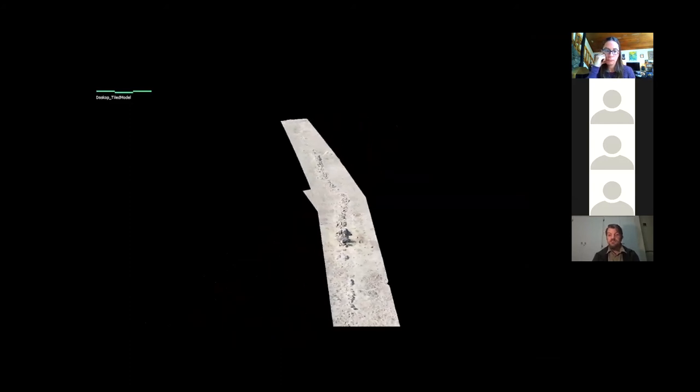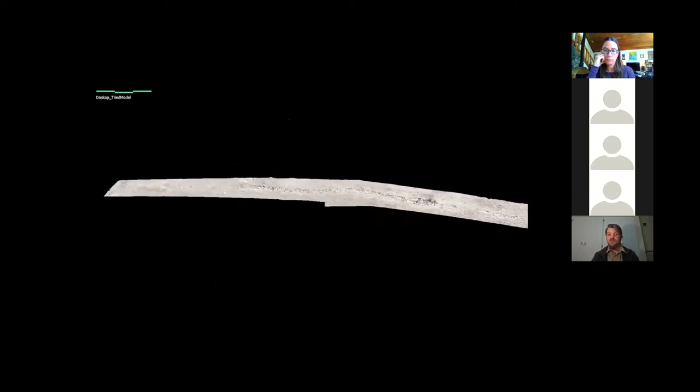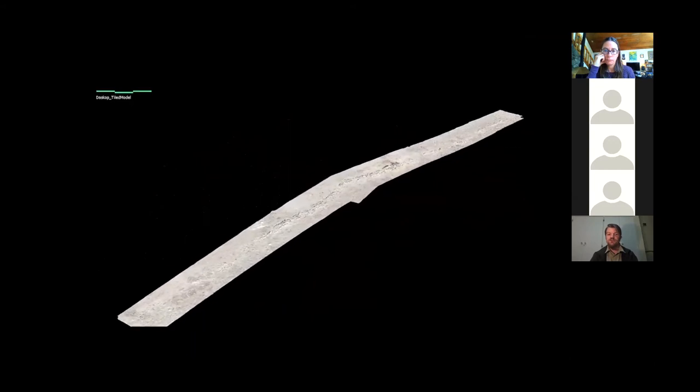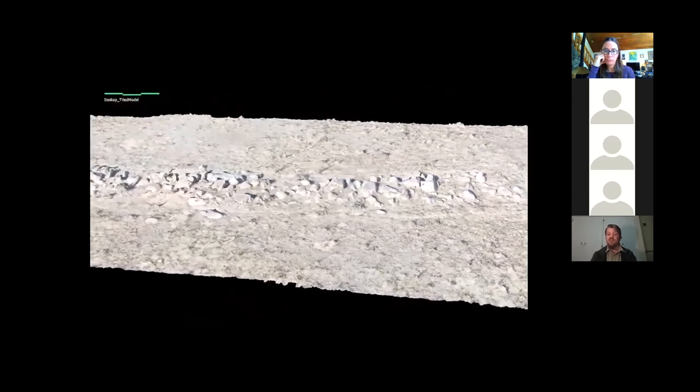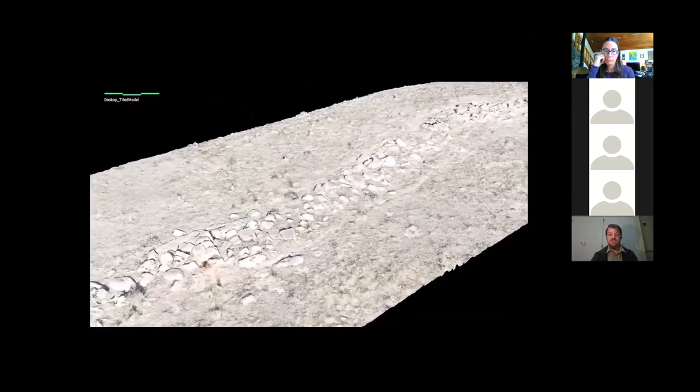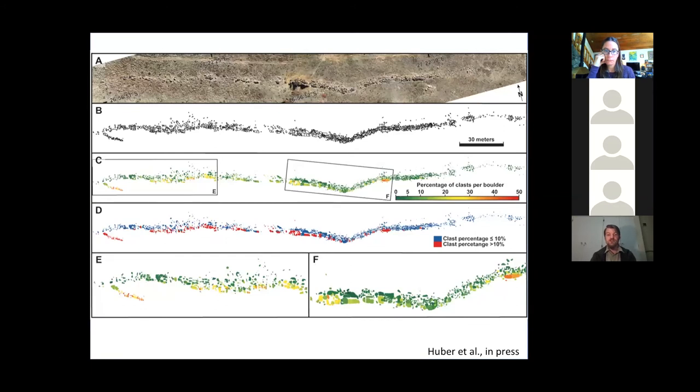So we decided we wanted to study these inclusions in more details. This dike is the Daskop granophyre dike. Some of the parts of the dike seemed to have a lot of these clasts, other parts of the dike not so many. So we decided to map that. We walked along the dike and on each individual boulder, we gave it a score of the visual percentage of clasts that we could see. Then we flew drones over the dike and compiled the 3D model as well as this ortho photo. We outlined each of the boulders and then assigned it the percentage of clasts.